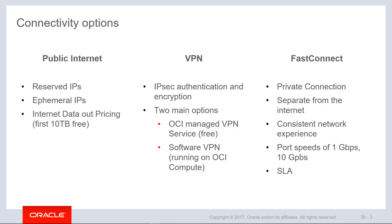With public Internet, we'll make use of either reserved or ephemeral public IP addresses, and we'll take into account the Internet data out-pricing that we talked about in the previous module. In terms of VPN, we'll use IPsec authentication and encryption, where we'll use either the OCI managed VPN service, or some sort of software-based VPN that would run on an OCI compute resource.